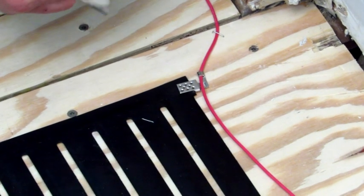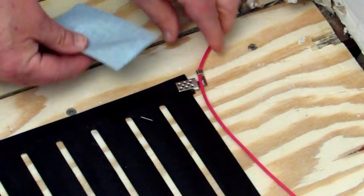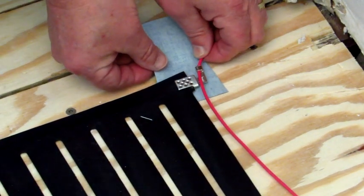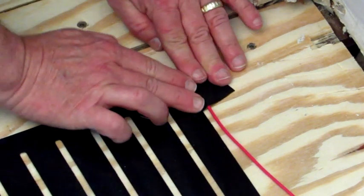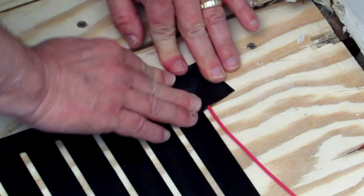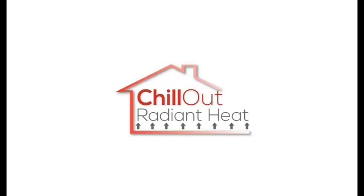Now that you've successfully tested your system, use the supplied tape to seal the clips. Peel off the aluminum, fold the tape over, and press it down with your fingers nice and tight so no moisture can get in. Do this to each and every one of the connections. You're now done with your Chill Out radiant heat installation.